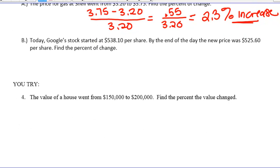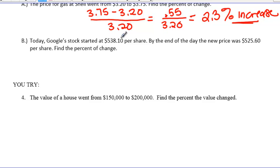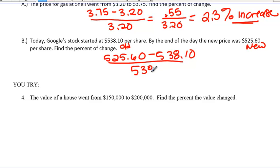Let's look at example B. Today's Google stock started at $538.10 per share. By the end of the day, the new price was $525.60 per share. Find the percent of change. So this first price, this is going to be our old. This one's going to be our new. And let's set up our equation. So we have, sorry guys, my pen was freezing. So we're starting with our new right here. So we get 525.60. And we're subtracting our old. So we get 538.10. And then we divide by our old again, which was 538.10.